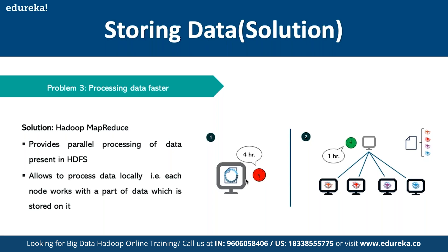MapReduce allows each node to work with part of the data stored on it locally. For example, if we give a job to process 1,000 pages to a single system, and then give the same job to four connected systems each handling 250 pages per hour, the single system takes four hours while the distributed system takes one hour. It's like the classic math problem: if one worker completes a building in 30 days, how long will three workers take? We divide the work so they work faster and get output quickly.